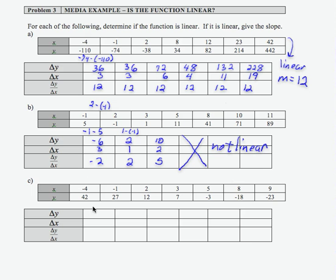For this last data set, again, I'm going to compute delta Y. 27 minus 42 is 15. Negative 1 minus a negative 4, let's write that out, is negative 1 plus 4, which is 3. So I'm going to get a ratio of 5. I'm going to do that for the rest of the table, and then we'll see what happens.